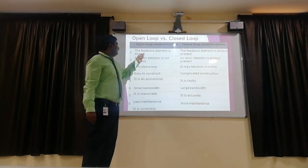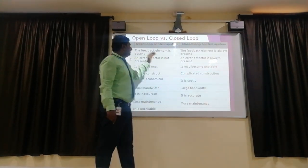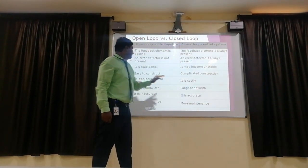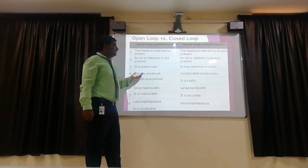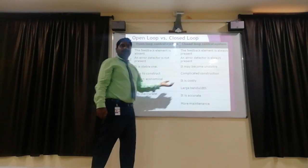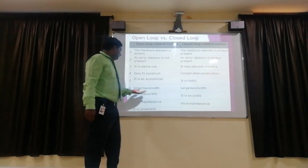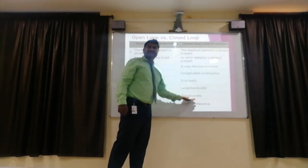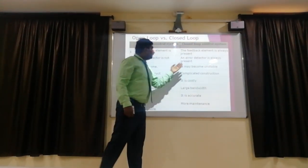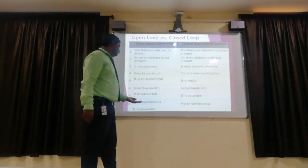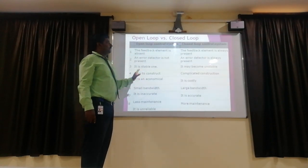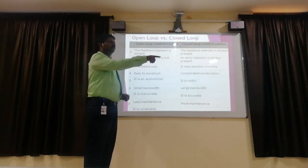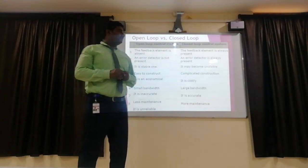Comparing open loop and closed loop: in open loop, there is no feedback element; in closed loop, the feedback element and error detector are present. The open loop is stable while the closed loop can become unstable. Open loop construction is simple; closed loop construction is complicated. Open loop is economical; closed loop is more expensive. Open loop is inaccurate; closed loop is accurate. Open loop requires less maintenance; closed loop requires more maintenance. Thank you, and in the next class we will cover another topic.